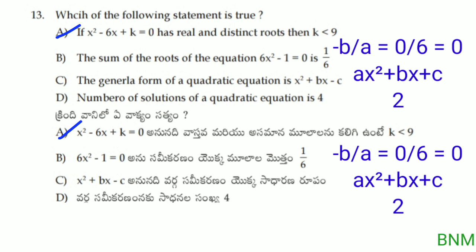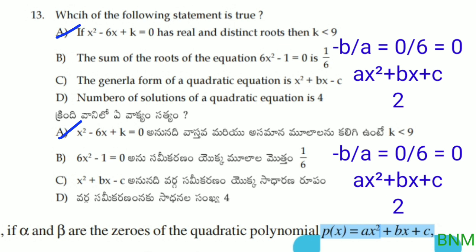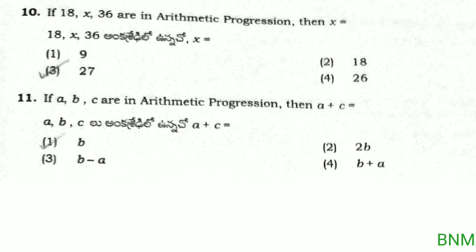Option B: sum of the roots of 6x squared minus 1 equal to 0. The formula is minus b by a. Here b is 0, so 0 by 6 equals 0, not 1 by 6. So option B is wrong. Option C: the general formula of a quadratic equation — that is also wrong as stated; the general form is ax squared plus bx plus c. Option D: number of solutions of a quadratic equation is 4 — that is wrong, quadratic equations have 2 solutions. So option A is the right answer.